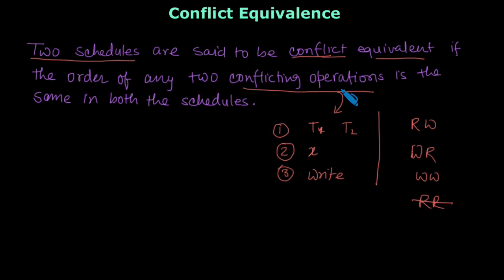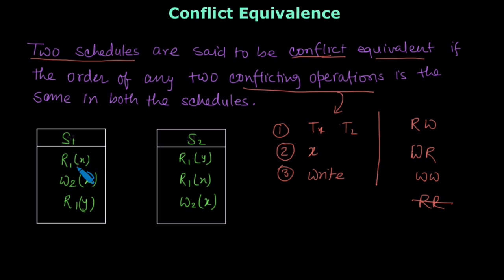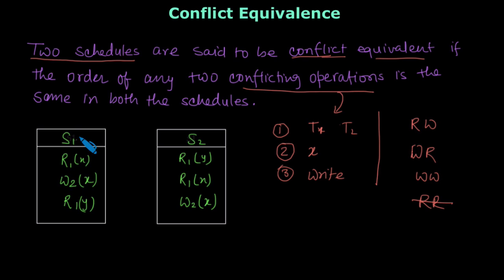When we have the same order of conflicting operations in two schedules, we say those two schedules are conflict equivalent. Let's see an example. In this example, we have been given two schedules, and we have to check whether they are conflict equivalent — that is, whether the conflicting operations are in the same order.